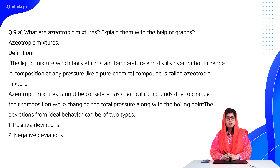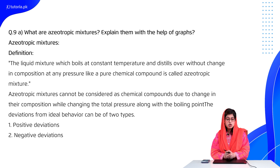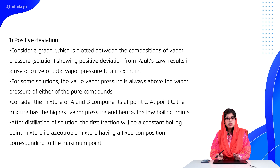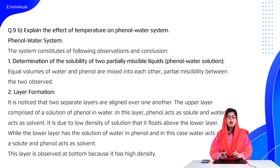Moving forward, students — question number 9: what are azeotropic mixtures? Explain them with the help of a graph. First, define azeotropic mixtures: the liquid mixture which boils at constant temperature and distills over without changing composition at any pressure, like a pure chemical compound, is called an azeotropic mixture. Then tell about positive and negative deviation solutions, use a graph with examples, and explain the key points of the graph in two to three lines. Also identify negative deviation examples.